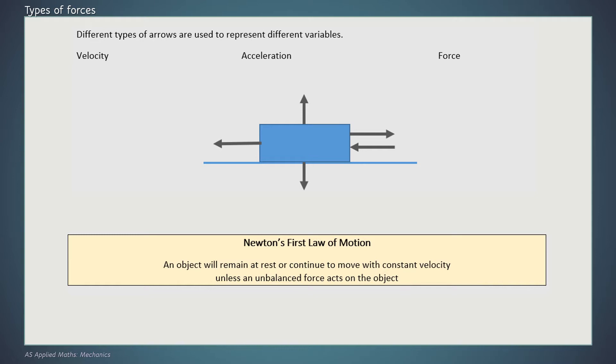So what we're going to start with is looking at the different types of arrows that we can use. I would recommend that you use these arrows when you're doing your own diagram, just so that you can distinguish between velocity, acceleration, and the force. Velocity is a single arrow, acceleration has a double arrow on it, and force has a solid end to it.